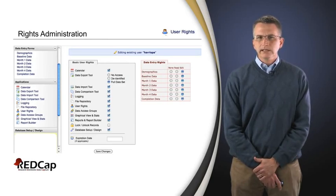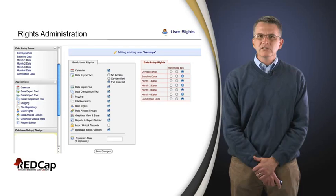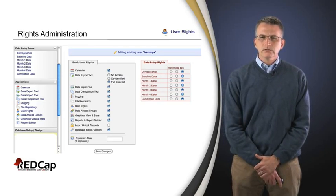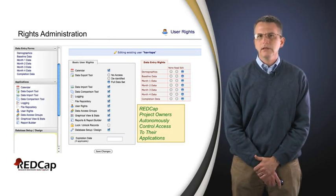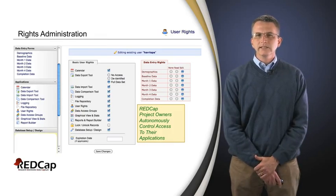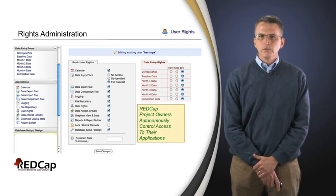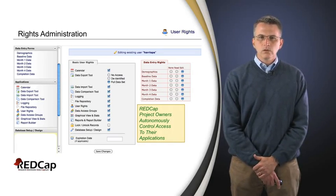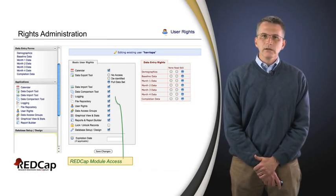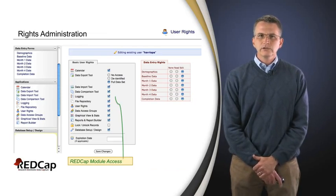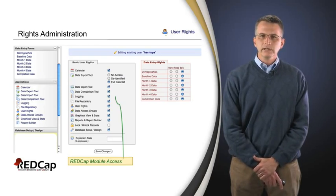Another thing that's important in any electronic data capture system is the notion of rights. In REDCap, any individual can be added to a study. After they've been added, we see on the right there that the project owner has access and can associate a particular user at the form level — they can have read, write, or no access to specific case report forms or survey instruments. They also have the ability to dial up or down access to particular modules included with any REDCap study.